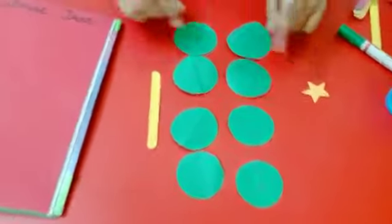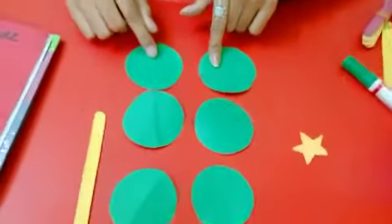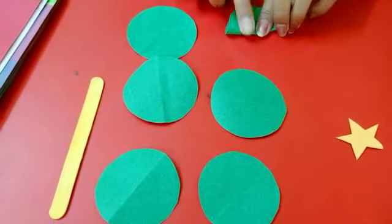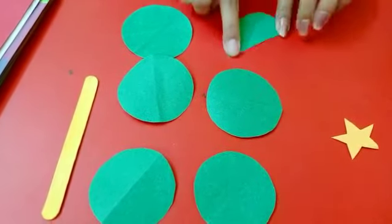Now kids, you have to make semi-circles of these circles. So you have to fold each circle like this.